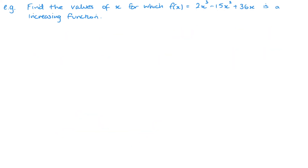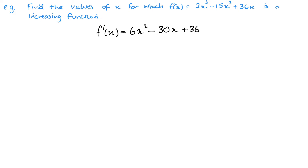The first example: find the values of x for which f(x) is an increasing function. The first thing to do is differentiate. Multiply by the power and take one away from the power — so we get 6x squared minus 30x plus 36. That is the function differentiated.